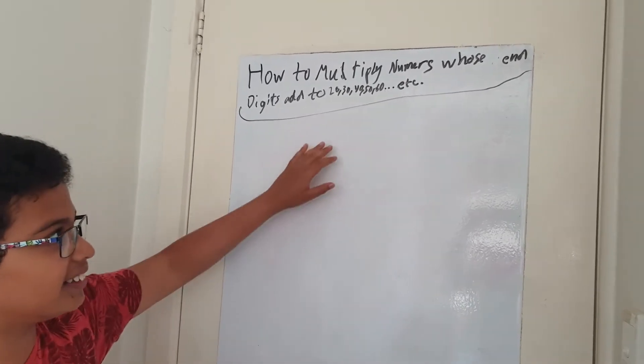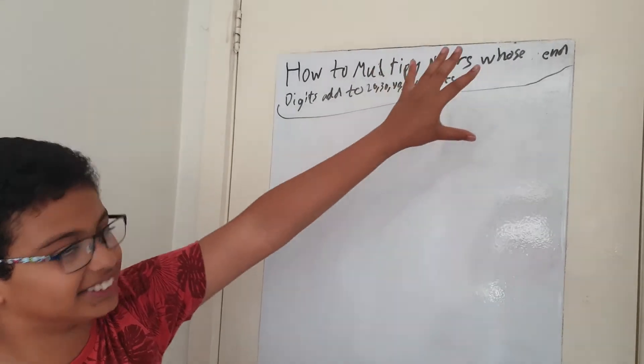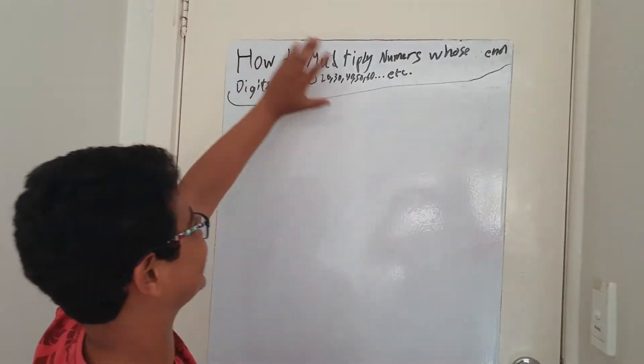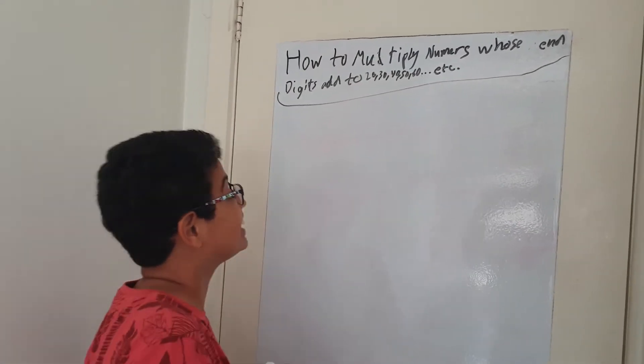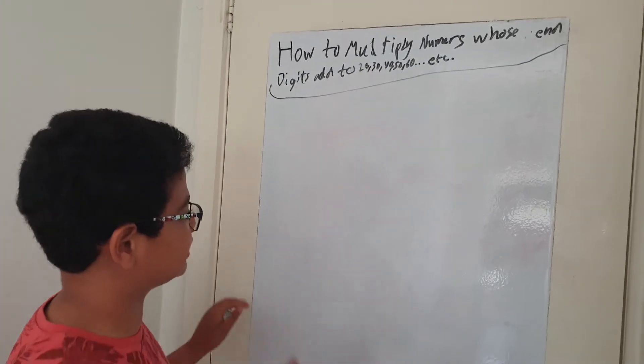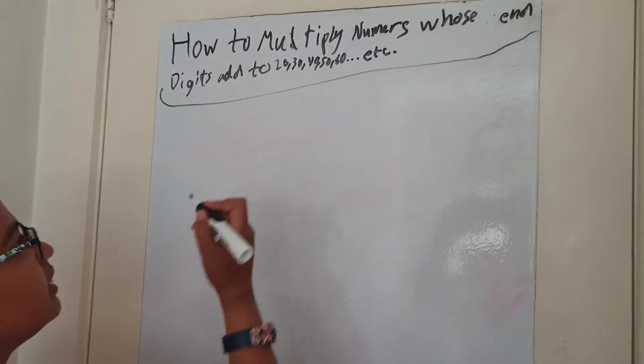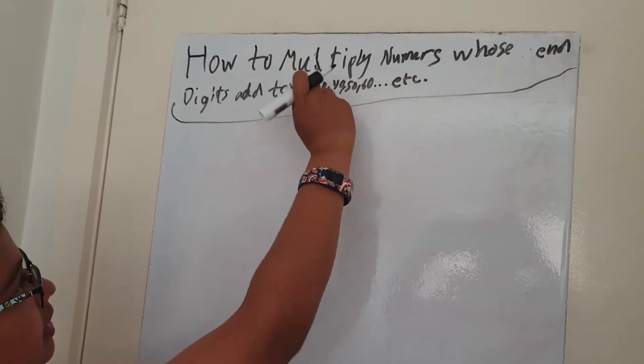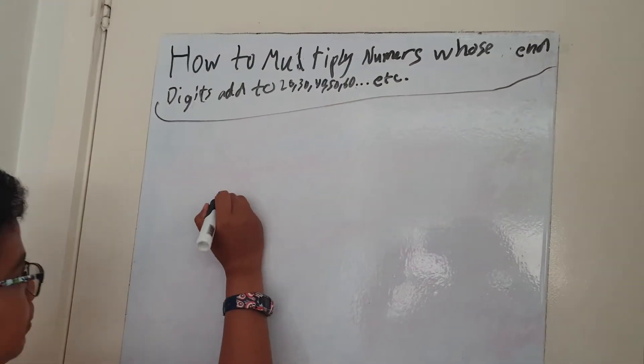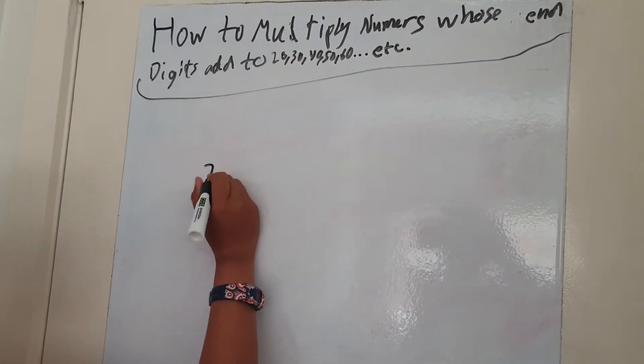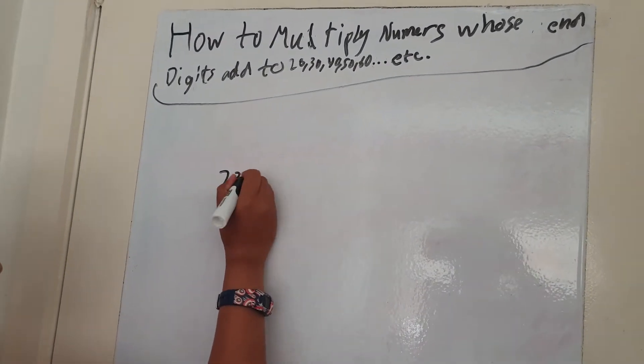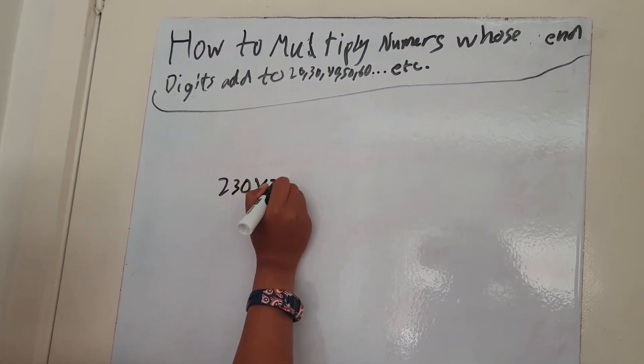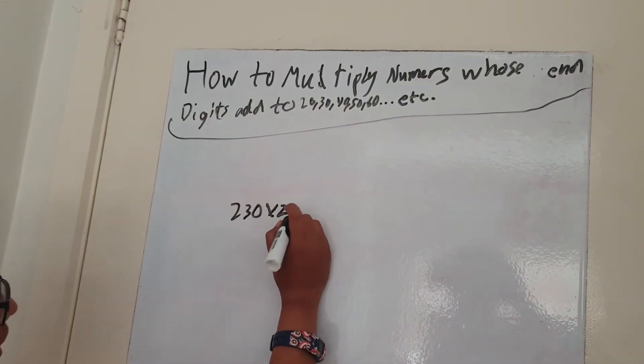The title actually sucks, so just ignore the title. Let's get started. For example, what I mean by end digits adding to 20, 30, 40 is, for example, you could have 230 times 210.